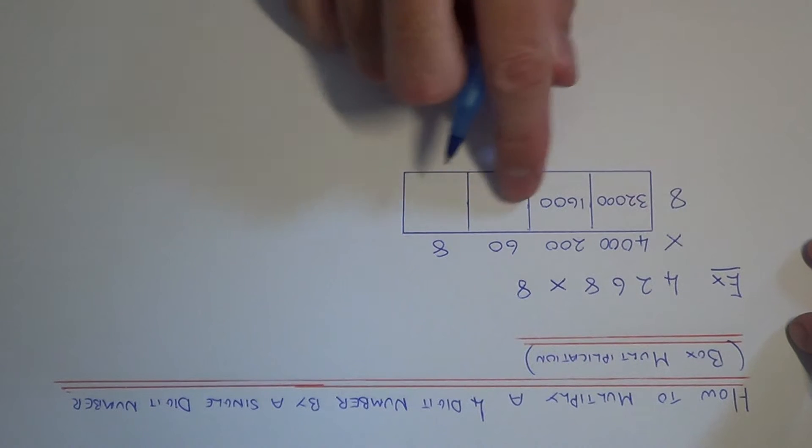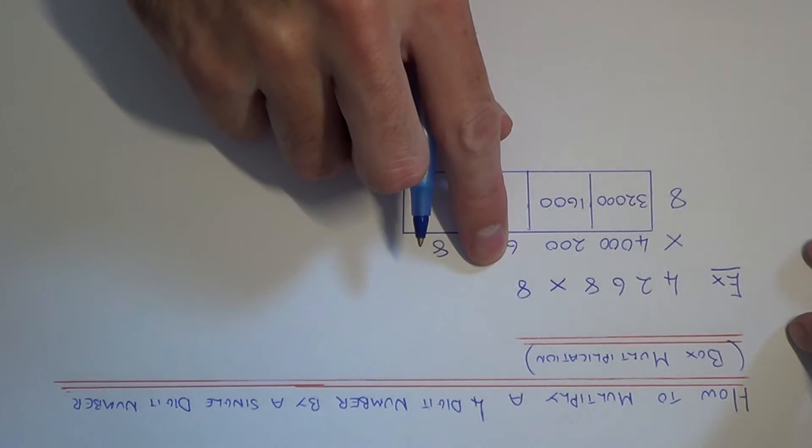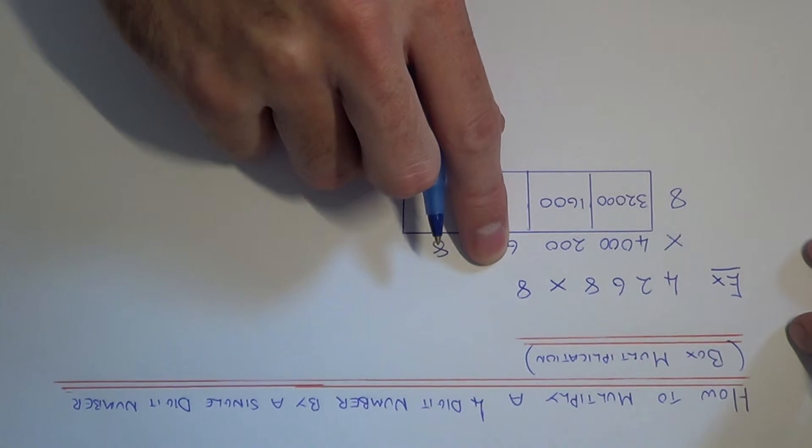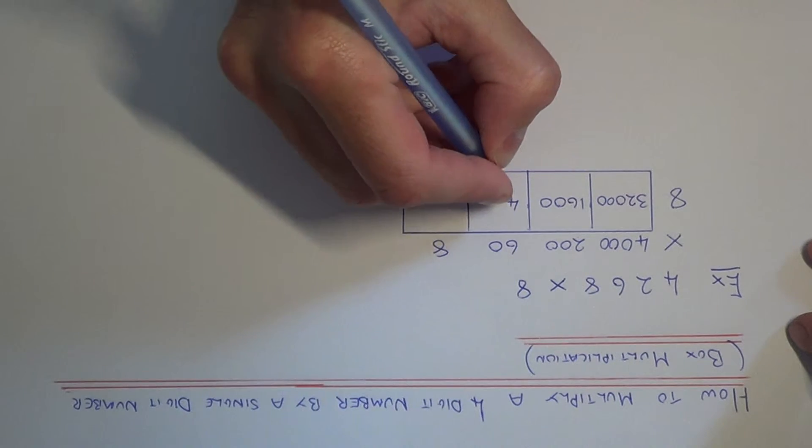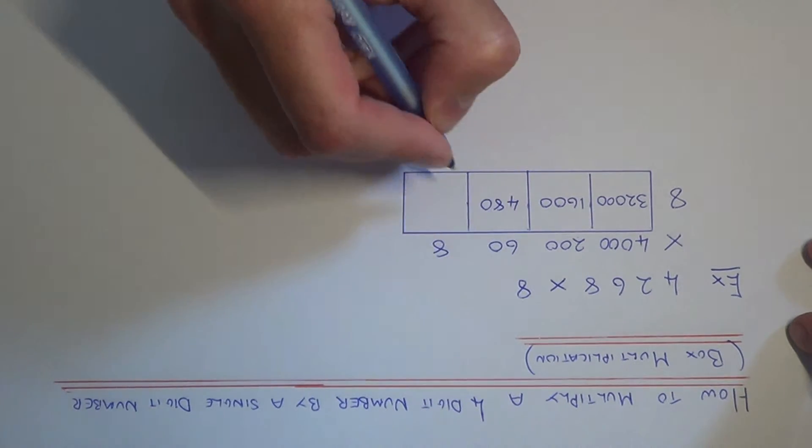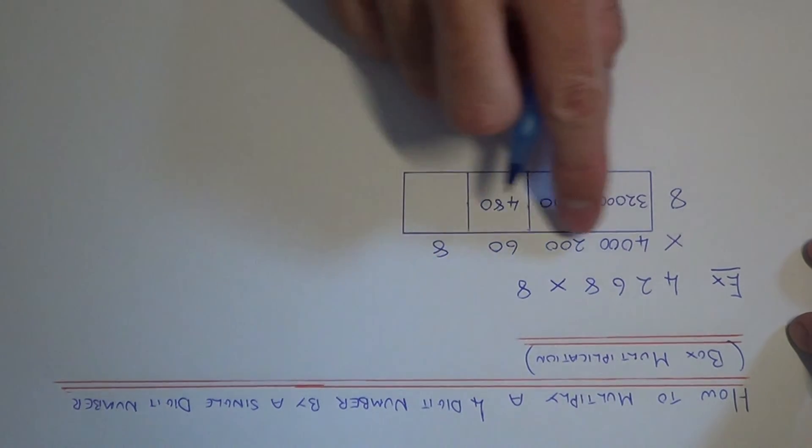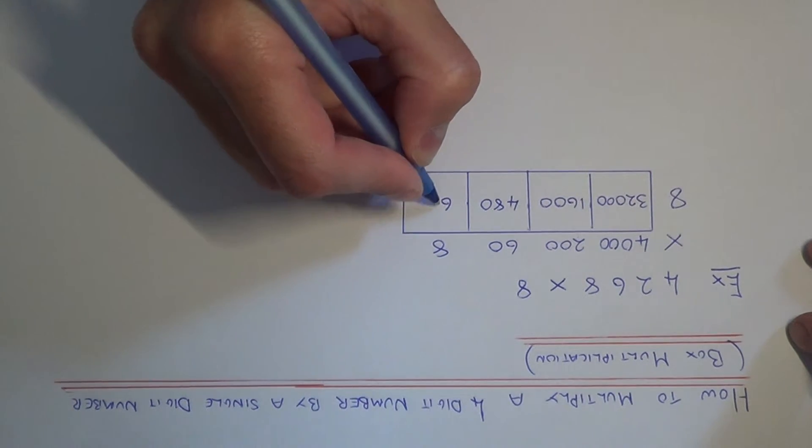For the next box I've got to do 60 times 8, so let's cover up the zero there. So 6 times 8 is 48, and then add the zero back on. And the final box is easy, 8 times 8 is 64.